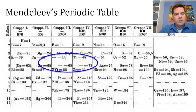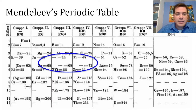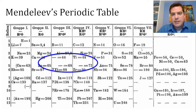He said, well, there should be an element there, and it should have a mass of about 44 atomic mass units. He predicted that, and it turns out he was right. There is an element with a mass of about 44 that has similar properties to boron and aluminum. By lining up the elements with the same properties in the same columns, he was able to predict elements that hadn't been discovered yet.